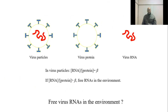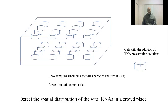If we want to detect free viral RNA in the environment, the ratio of viral RNA to viral protein is a useful parameter. If the value of the parameter is greater than a certain value, this indicates that there is free RNA in the environment. It would be better if the spatial distribution of the viral RNA in a crowd is mapped. Of course, this is limited by detection technology.